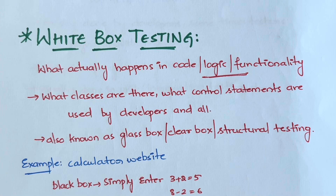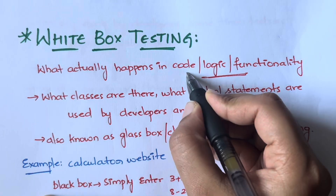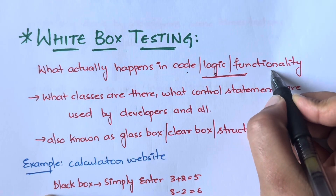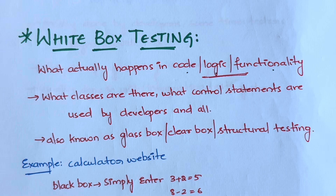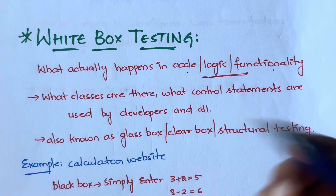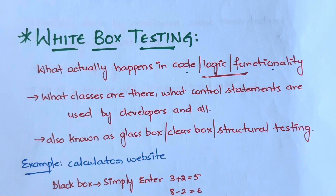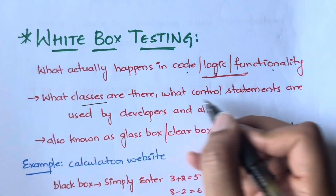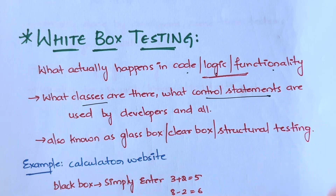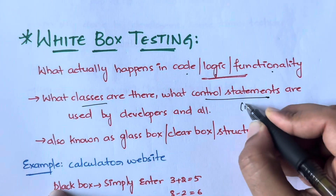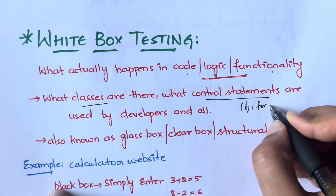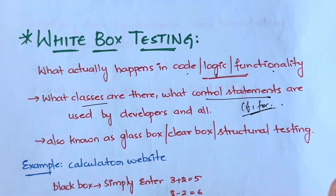In white box testing, what is actually happening inside the code, logic, or functionality you will be able to see everything. What classes are there — like in Java you have classes — what classes are being used, and what control statements are used by the developers, like whether they are using an if statement or a for loop, everything you can see.